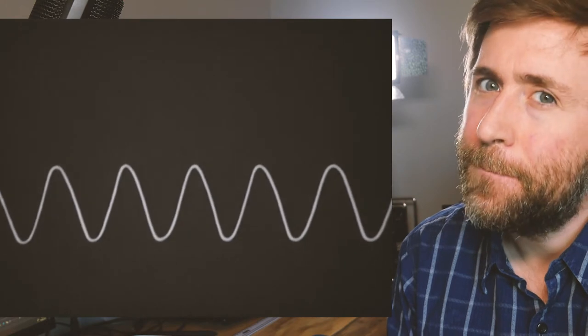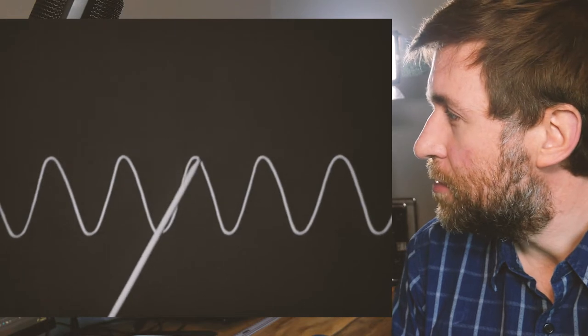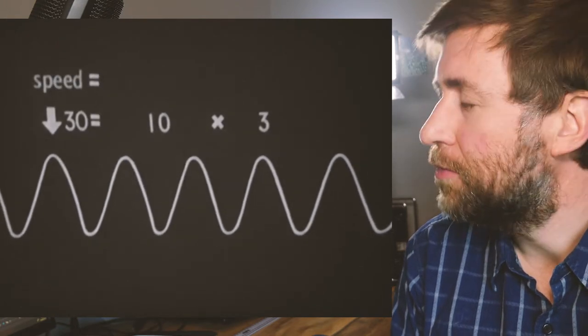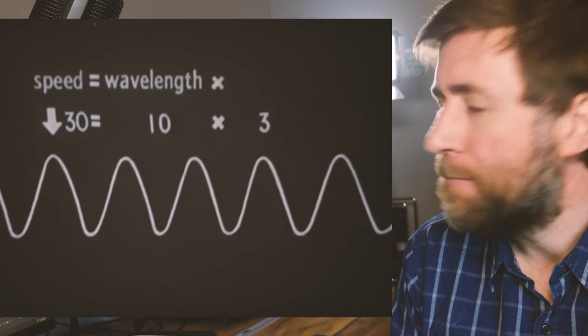This you probably know we call the wavelength, the distance from a point on one wave to the corresponding point on the next wave. Speed is the wavelength times the frequency.